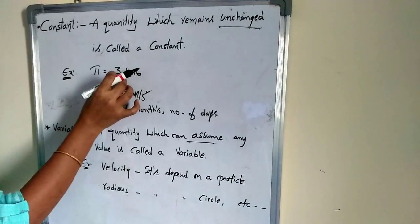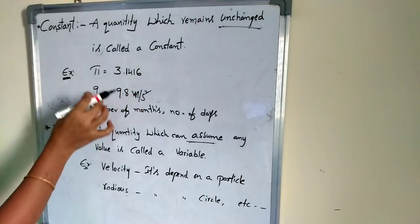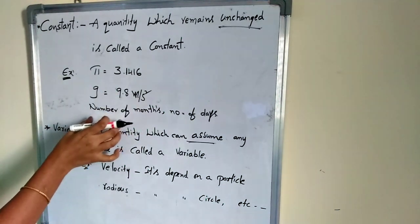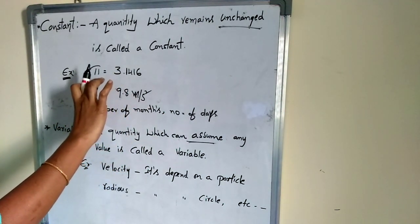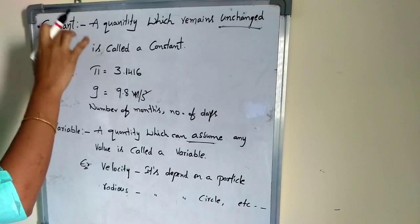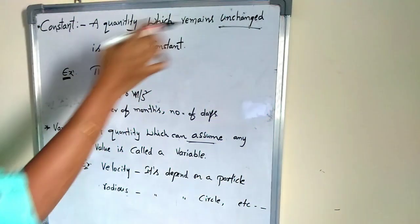For example, pi is equal to what? 22 by 7, that is 3.1416. The gravity g is equal to 9.8. The number of months in a year. So these are the universal constants - we cannot change these values.